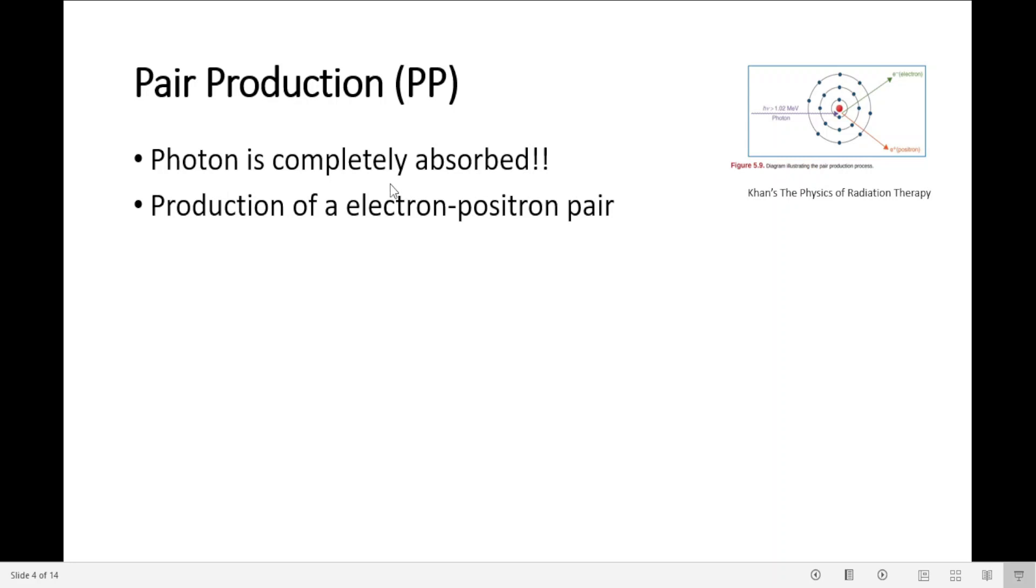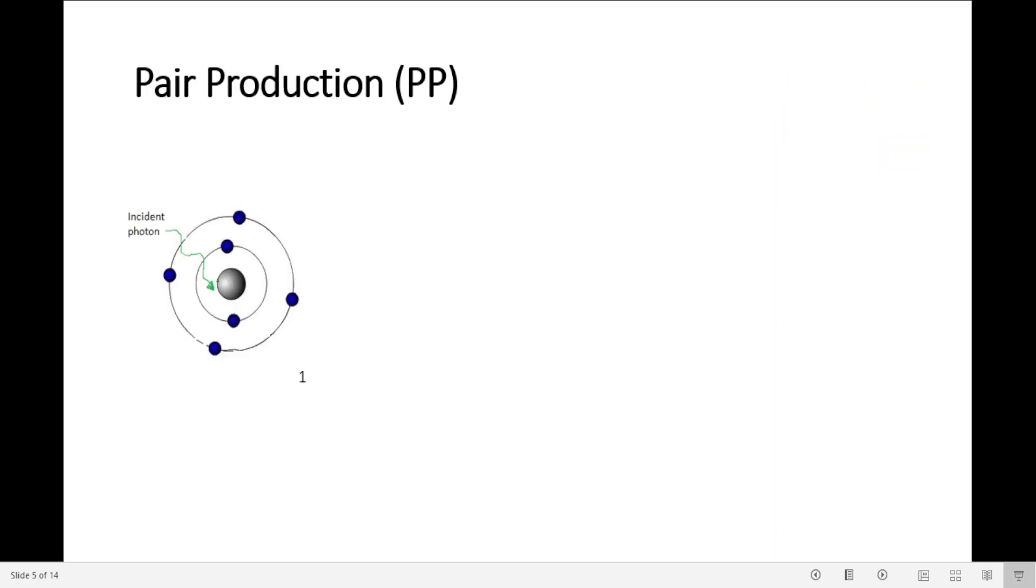In the process, the photon is completely absorbed and there is a production of an electron-positron pair. Let's go step by step - we have an incident photon coming, interacting with the electric field of the nucleus.